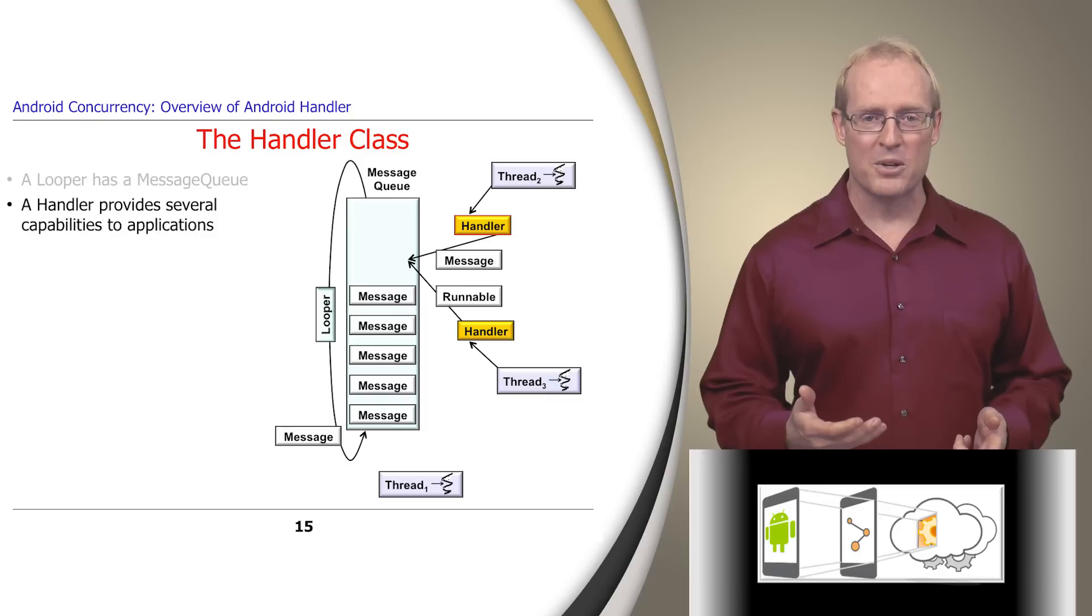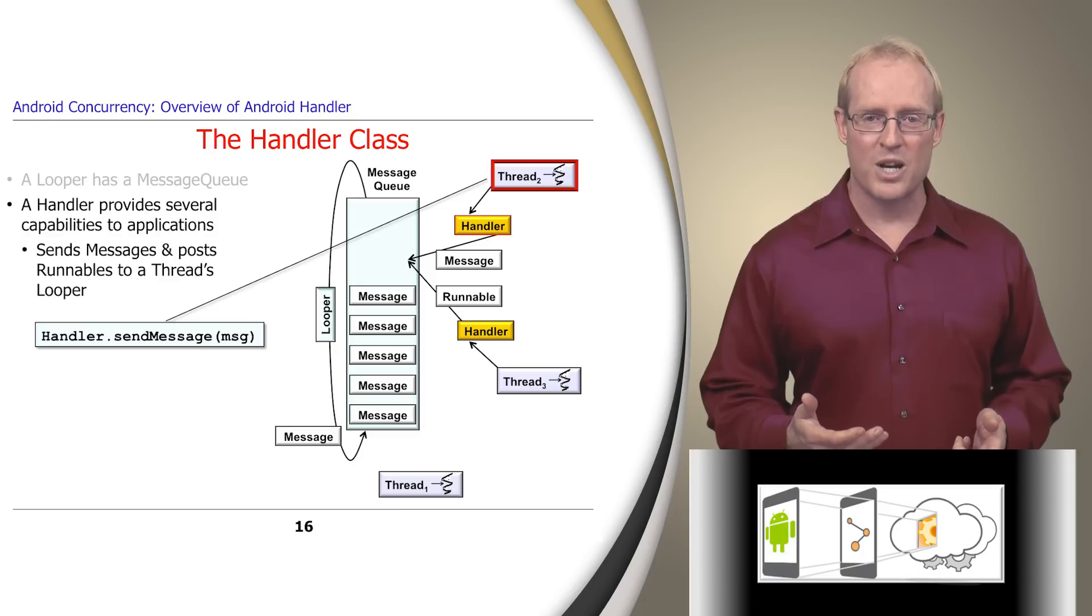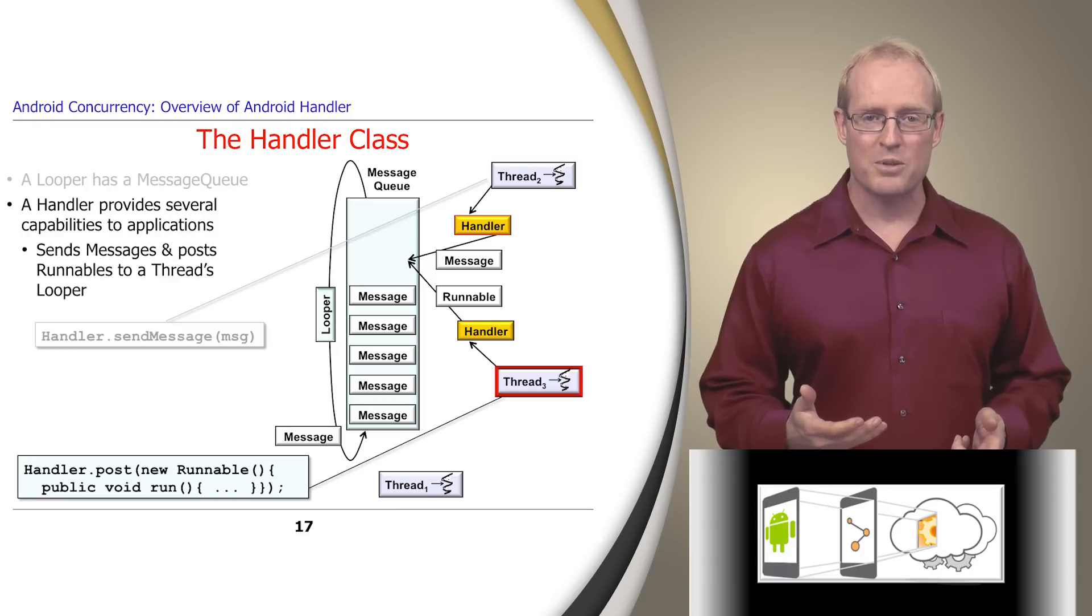A handler provides several capabilities to applications. For example, it can be used to send message objects and or post runnable objects to a looper in the handler's thread or in a different thread.